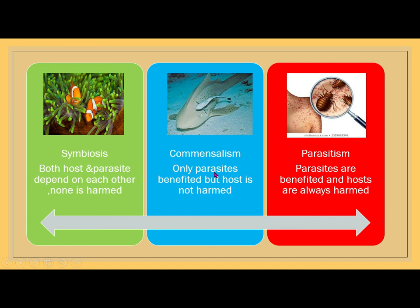Another type of association is commensalism — only the parasite is benefited but the host is not harmed. The example is a shark, a large fish, with a small fish attached to its body. Due to the movement of the larger fish, the small fish gets nourishment, shelter, and protection from its enemies, whereas the shark is never harmed. Such type of association is known as commensalism.